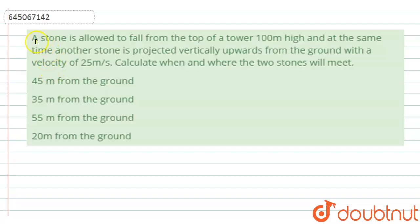The given question is: a stone is allowed to fall from the top of a tower 100 meter high and at the same time another stone is projected vertically upwards from the ground with a velocity of 25 meter per second. Calculate when and where the two stones will meet, and these are the given options we have.